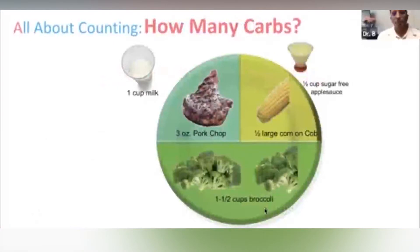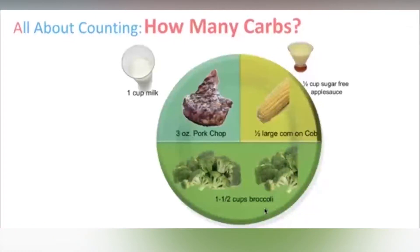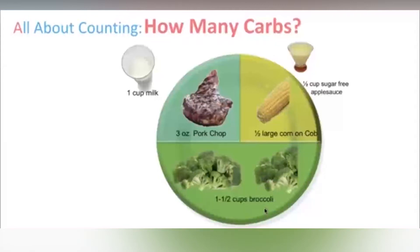I'm reasonably hungry today — this is my plate. Help me count the carbs. It's a reasonably colorful plate. One and a half cups of broccoli, a pork chop, half a corn on the cob — I love corn on the cob, Iowa of course — one cup of milk, and half a cup of sugar-free applesauce. How many grams of carbohydrates are in this? You have some choices on your screen — take whichever one you think it is.